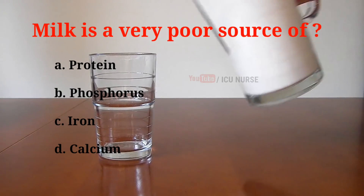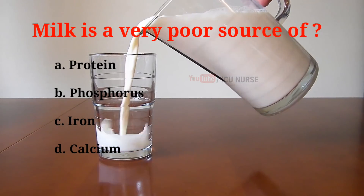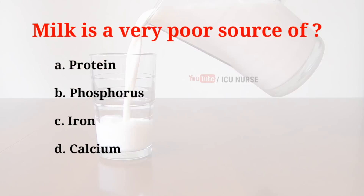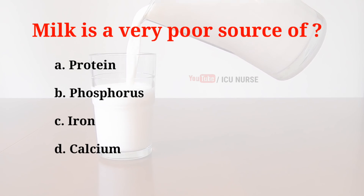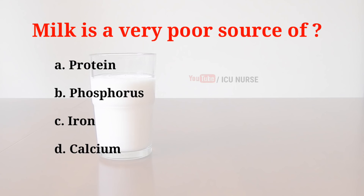Milk is a very poor source of: A. Protein, B. Phosphorus, C. Iron, D. Calcium. And the correct answer is C. Iron.